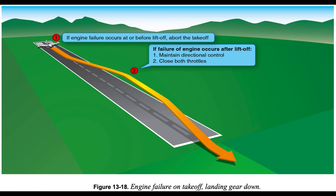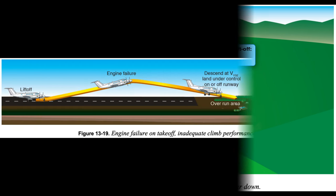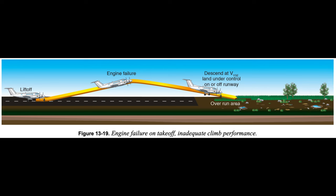Landing gear control selected up, single-engine climb performance inadequate: When operating near or above the single-engine ceiling and an engine failure is experienced shortly after liftoff, a landing needs to be accomplished on whatever essentially lies ahead. There is also the option of continuing ahead in a descent at VYSE with the remaining engine producing power, as long as the pilot is not tempted to remain airborne beyond the airplane's performance capability. Remaining airborne and bleeding off airspeed in a futile attempt to maintain altitude is almost invariably fatal. Landing under control is paramount. The greatest hazard is attempting to fly when it is not within the performance capability of the airplane to do so.